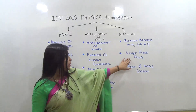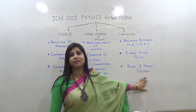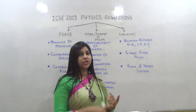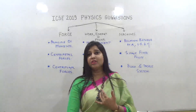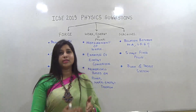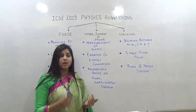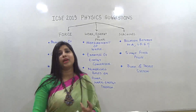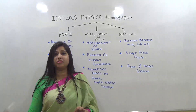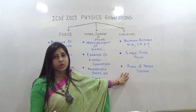Let's move to the block and tackle system. Under it, they will give you a velocity ratio and tell you to draw and label a block and tackle system — labeling the tension, load, and effort with proper directions. Numericals on the block and tackle system can also come.